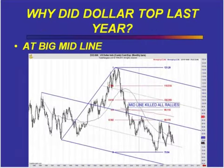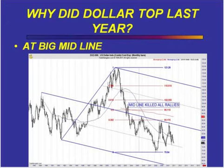What we basically do is combine the pitchfork lines with the other work. This is a very long-term look at the US dollar. Why has it topped where it has over the past few years? If you put the ginormous pitchfork on it, what you will see is a resistance midline that has been tagged three different times in the last decade, and it repelled the action each time. If you put the pitchfork line on it, you may come to understand the pattern a lot more.